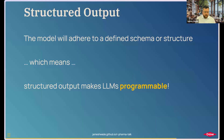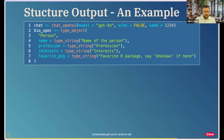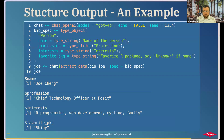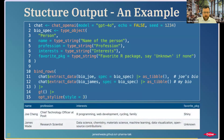A simple example of this would be to extract entity information coming out of a biography — maybe name, profession, interests, and because we're at an R conference, a favorite package. In this case, I've taken Joe's bio from the R Pharma webpage, and we can get this structured output coming out of this. We don't have to stop there — I took my own bio and applied the same schema to extract this information.